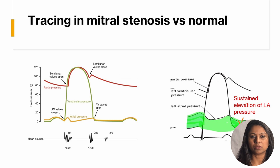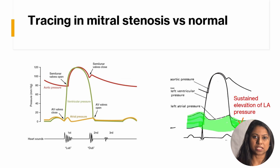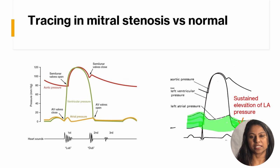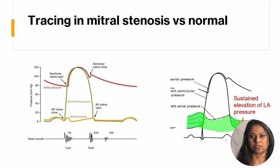In mitral valve disorders, look for changes in the left atrial pressure tracing. Mitral stenosis is seen in many cases of rheumatic heart disease. In mitral stenosis, there is narrowing of the opening at the mitral valve so that the left atrium has to push harder to eject blood into the left ventricle. This leads to an increase in pressure in the left atrium and left atrial hypertrophy. In a normal cardiac cycle, the left atrial pressure tracing is very close to the baseline of the left ventricular pressure tracing, but in mitral stenosis, the left atrial pressures are continuously elevated in all phases of the cardiac cycle.